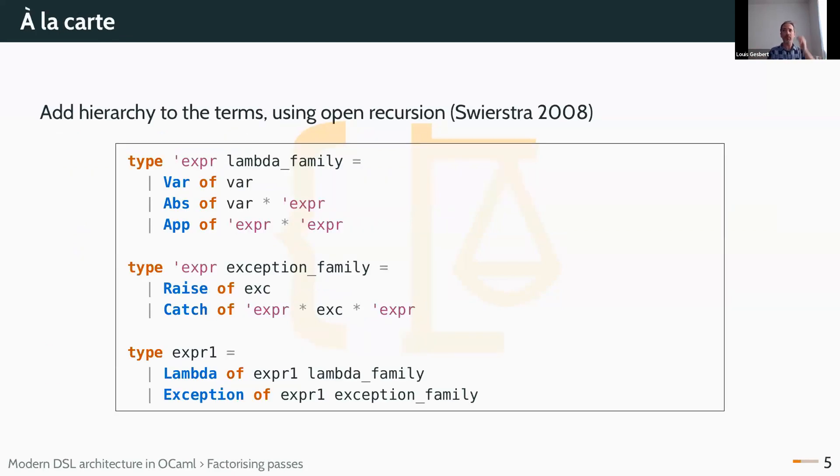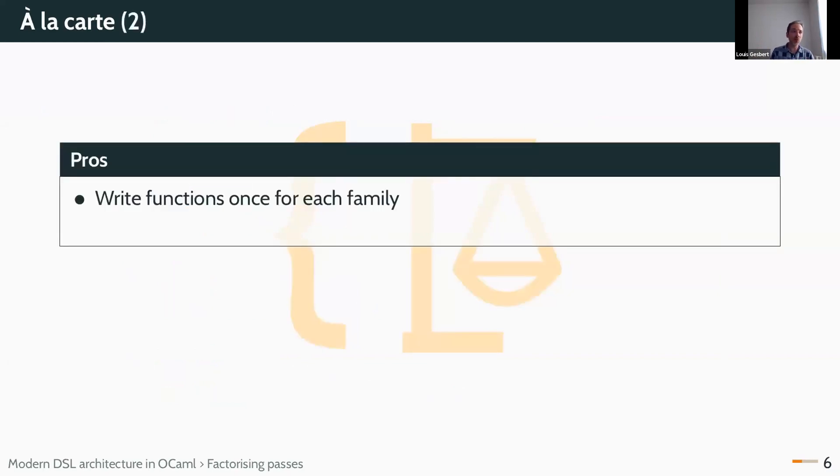One answer to this, which has been coined à la carte by Swierstra, is to add some hierarchy to the terms by defining your main ASTs as constructors that gather a few terms. And here, using open recursion on exp, you have the lambda terms grouped together, which recurs in your main ASTs, and so on for different sub-cases of the ASTs. This works and allows you to write functions just once for each family, functions like printers and so on. It reduces the boilerplate you need to have to just the combinations of this.